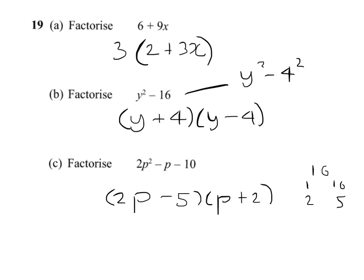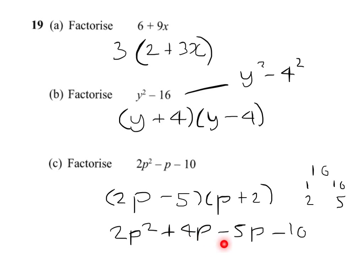You could expand this out — I'll just do a little bit. If I do 2p times p, you'll get 2p squared. Then 2p times 2 gives you 4p. Minus 5 times p gives you minus 5p. And finally minus 5 times plus 2 gives you minus 10. And of course this simplifies to give you the minus p. So that's my check that I've done it right.